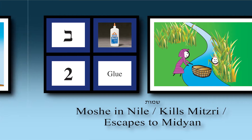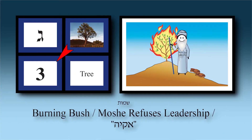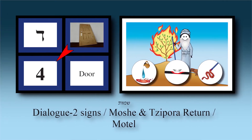He ran away to Midian. Chapter three — tree: he was with his flocks in the Midbar of Midian, came to a mountain, and Hashem spoke to Moshe Rabbeinu in the Sneh — tree, Sneh. Hashem told him to go back to Egypt. The conversation lasted seven days — a long dialogue back and forth. Moshe eventually agreed to go. Chapter four — door: the dialogue continued, and he brought back Tziporah; Eliezer was born.